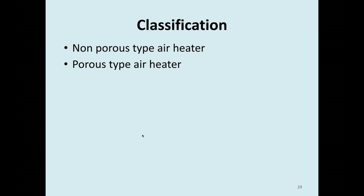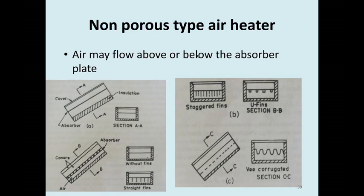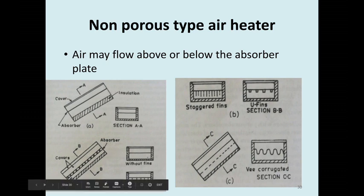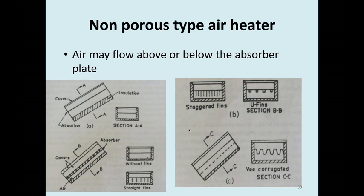The classification of solar air heaters: first is non-porous type and second is porous type. In the non-porous type, the air will be flowing either above or below the absorber plate. Examples of non-porous type include: without fins, with fins, staggered fins, U-fins, and V-corrugated sections. These are some examples of non-porous type air heaters.